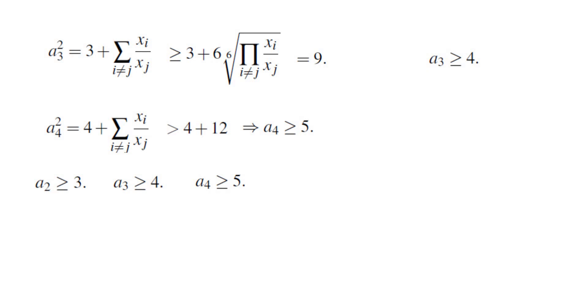Let's see what we would get if we were to do the same thing for aN. We would get aN squared equals n plus the sum of xi over xj. Applying the AM-GM inequality we would get n plus, there are n times n minus 1 terms here, and their product is 1. And that would give us n squared, and since we don't have equality, aN is at least n plus 1.